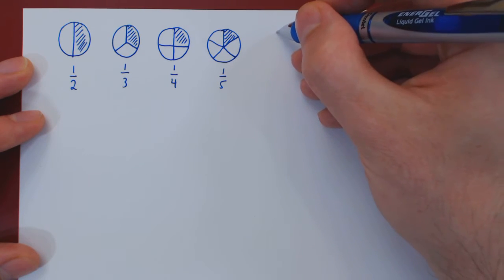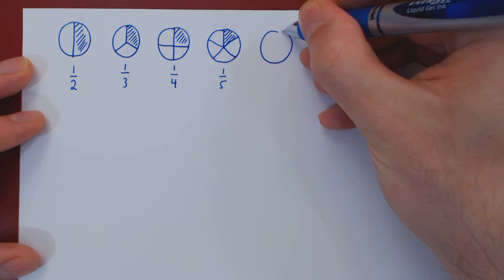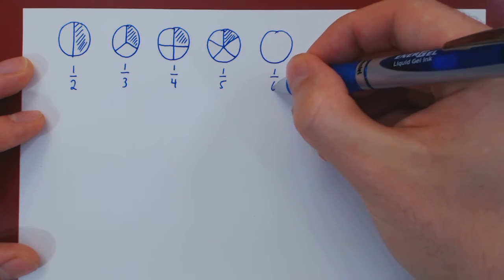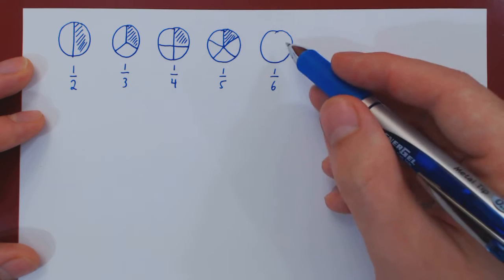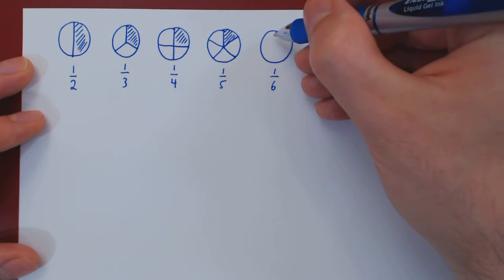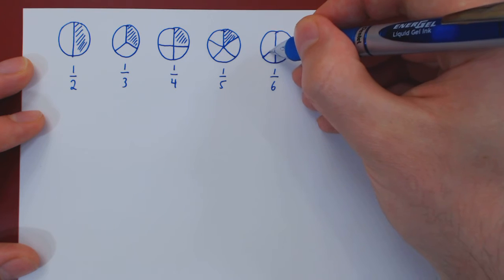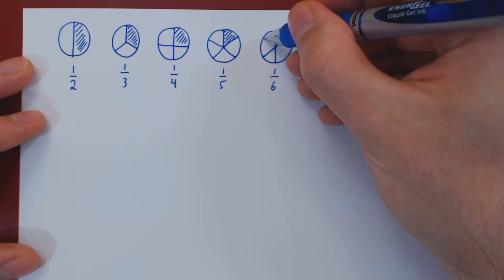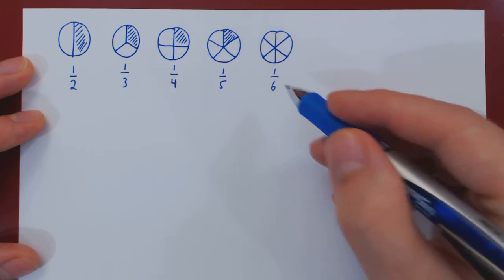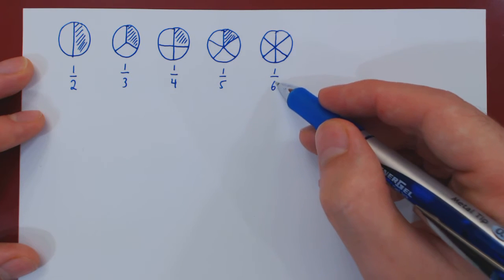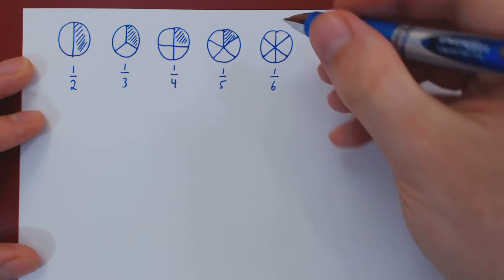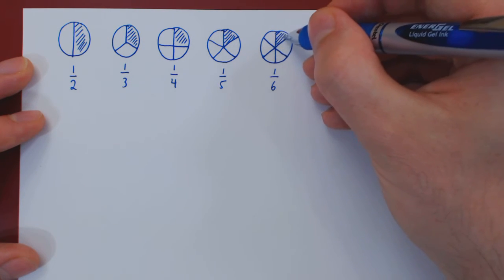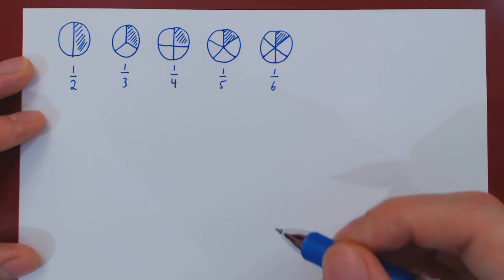Let's look at one more, one over six. We divide the whole circle into six parts of equal size and take only one part out of the total of six parts. So this region would correspond to one over six.